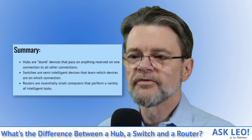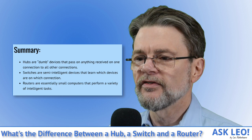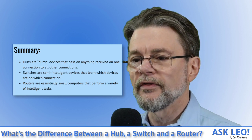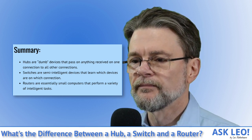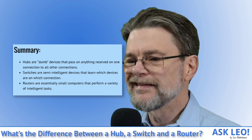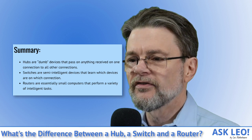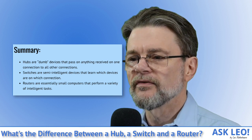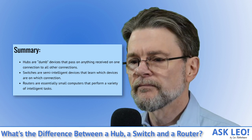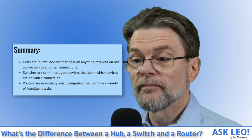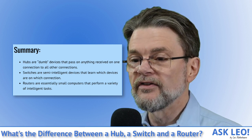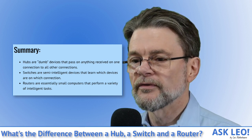Hubs are dumb devices that pass on anything received on one connection to all other connections. Switches are semi-intelligent devices that learn which devices are on which connection. Routers are essentially small computers that perform a variety of intelligent tasks.